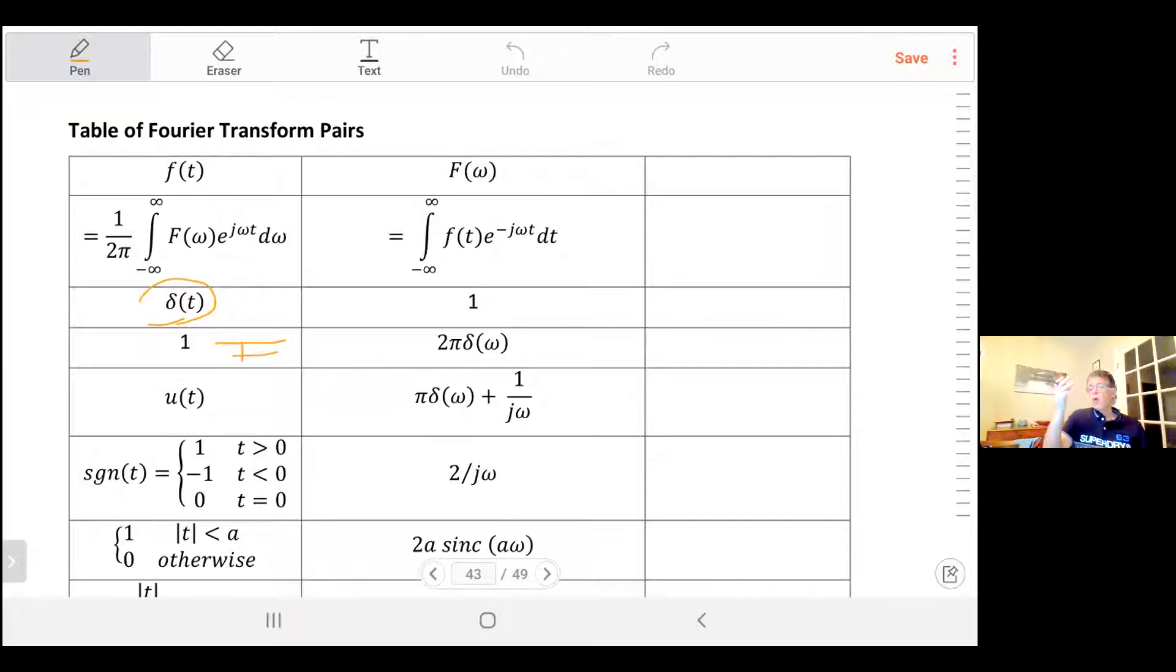So what we are going to do if we have this kind of table is to find the Fourier transform of functions. Your job, if you are asked to solve the problem using Fourier transform pairs or using this table, is to adapt the signal that is given in a specific problem to match one of these given formulas in the table.